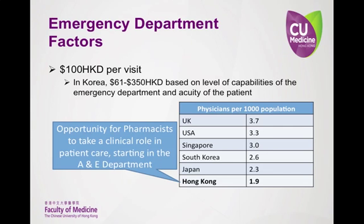Patients in Hong Kong pay $100 per visit in an effort by the government to minimize unnecessary A&E visits. To add some perspective, a similar thing is done in South Korea but is based on the abilities of the hospital, and the patient receives a discounted price if it was indeed an urgent situation.